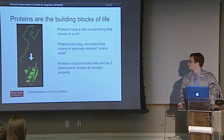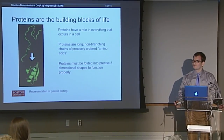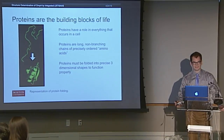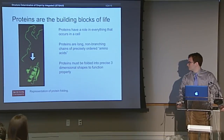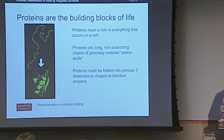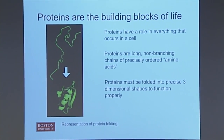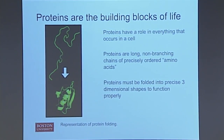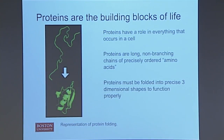Let's talk about proteins. Proteins are involved in essentially everything that goes on in the cell. You have structural proteins that allow your cells to take shape, and from there you can go all the way to enzymes that catalyze important chemical transformations. Proteins are long, linear, non-branched chains of amino acids. Each amino acid has one of 20 side chains with differing physical and chemical properties. In order for a protein to function, that long linear strand must be folded in a very precise way, and understanding that folding is the central idea of structural biology.